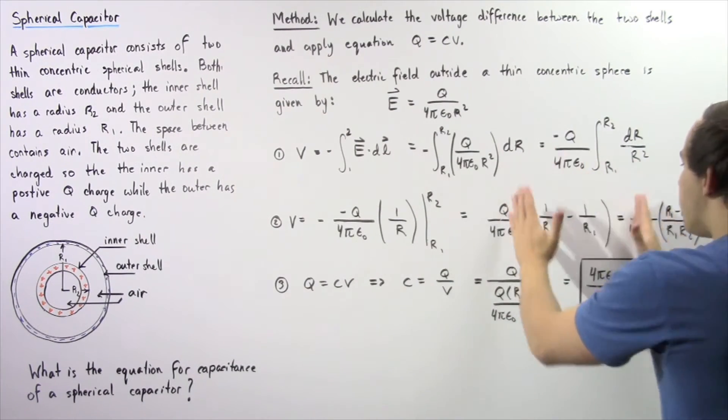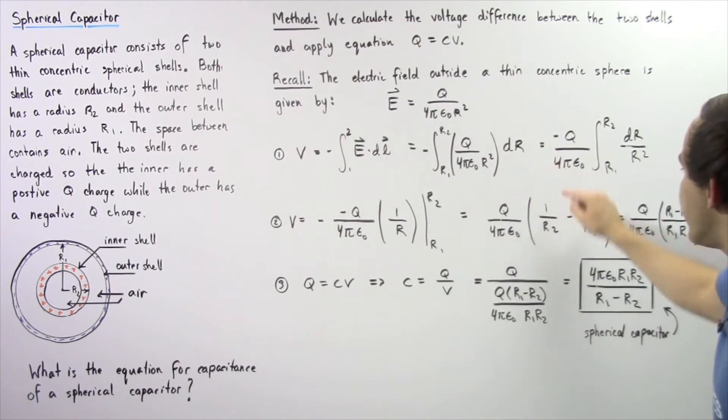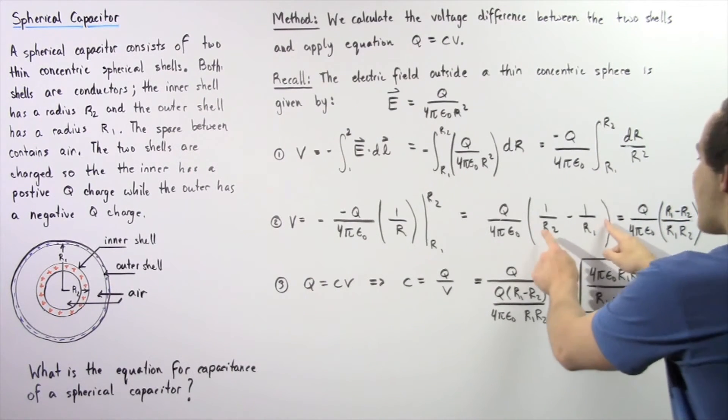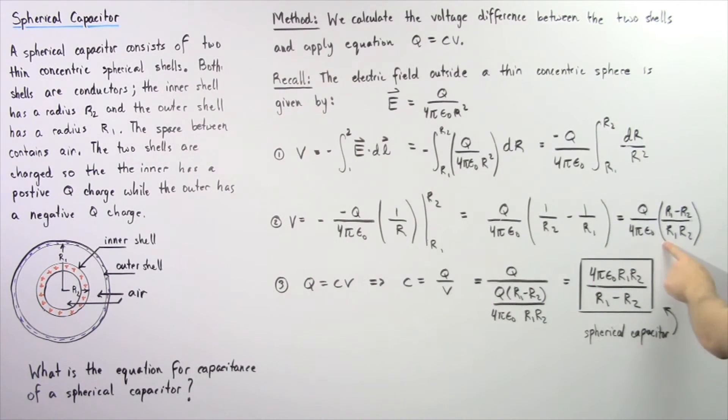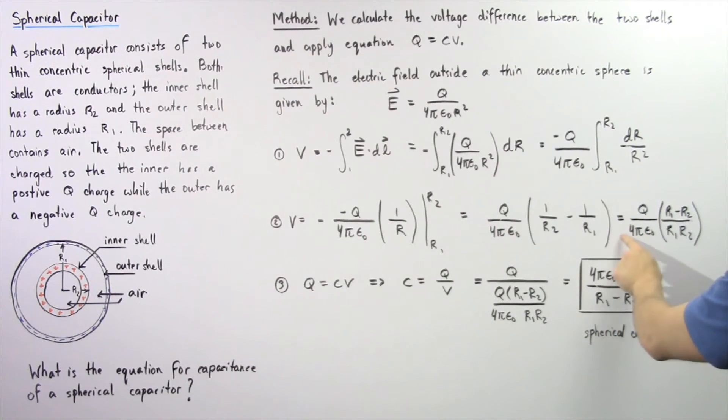To combine this fraction, we find the common denominator. We multiply the first term by r1 and the second by r2. The numerator becomes r1 minus r2 and the denominator becomes r1 multiplied by r2, with the whole fraction multiplied by Q divided by 4π epsilon naught. We've found the voltage difference resulting from these two shells.